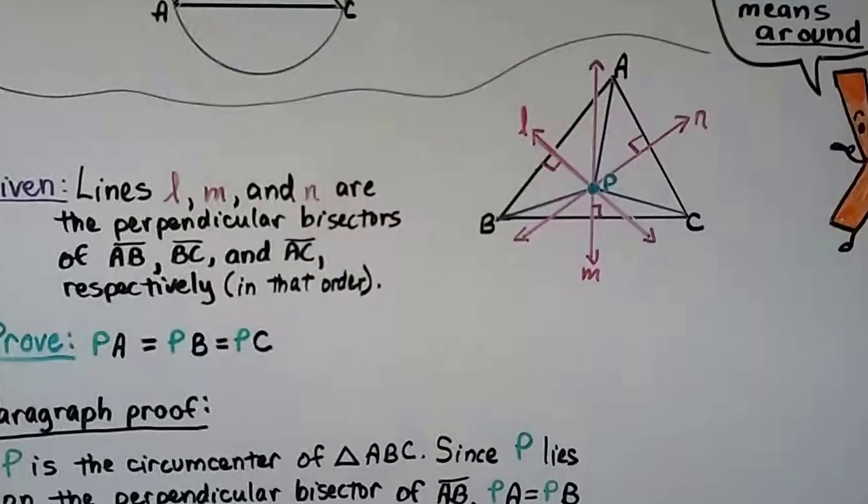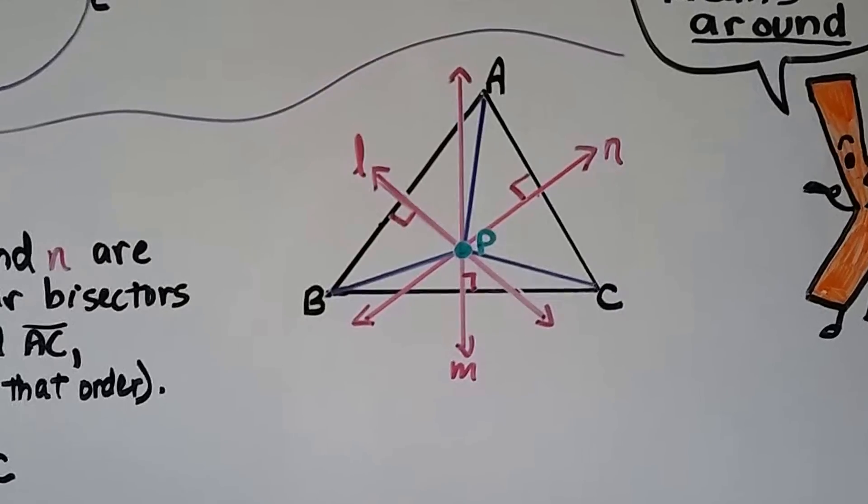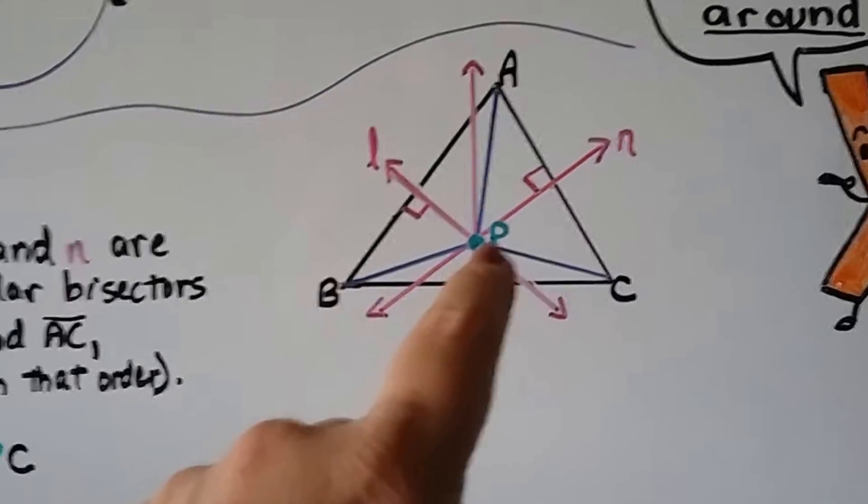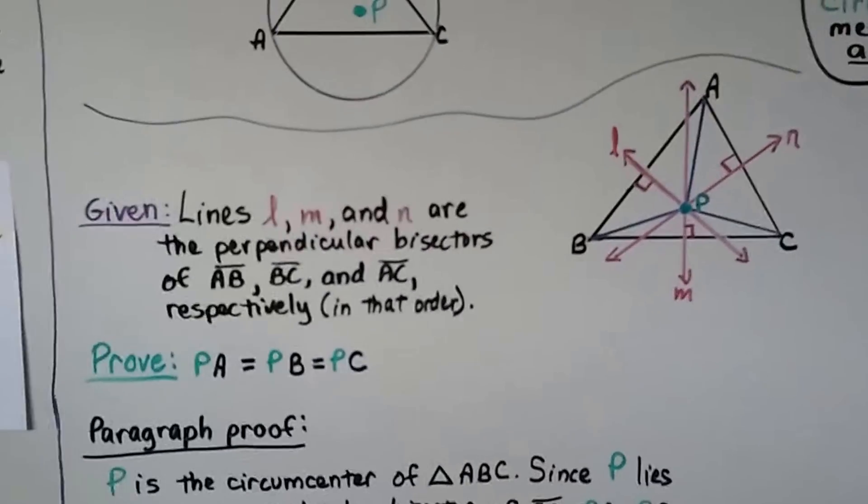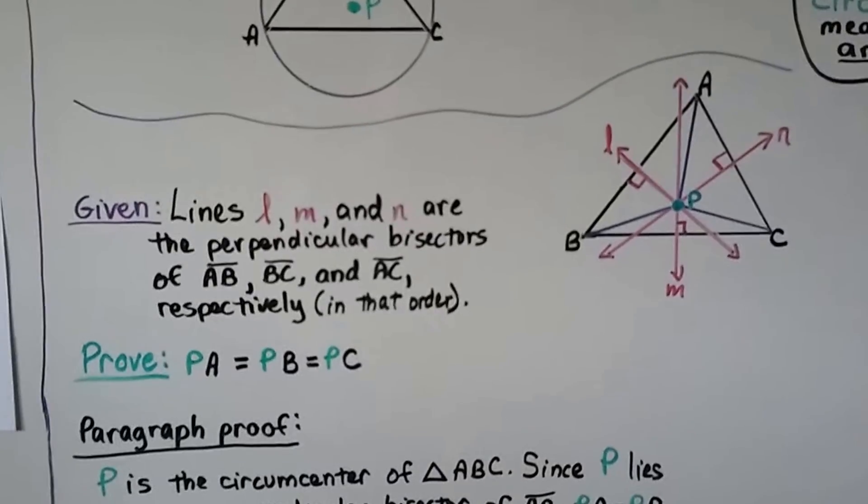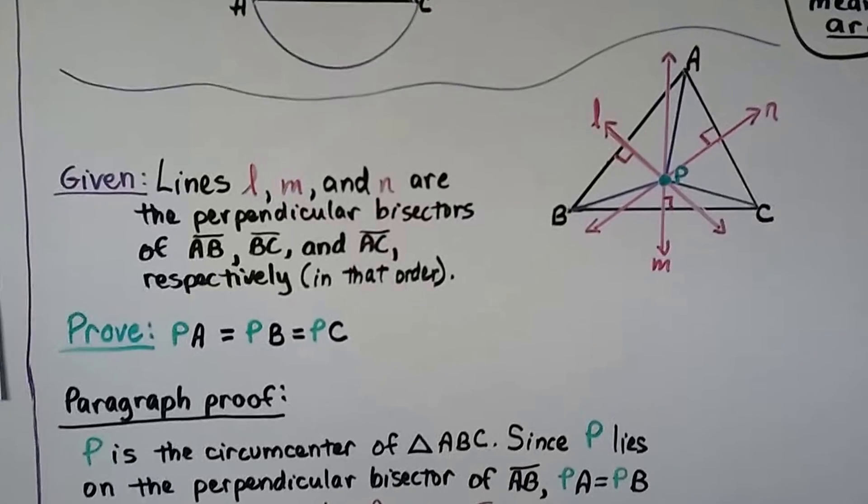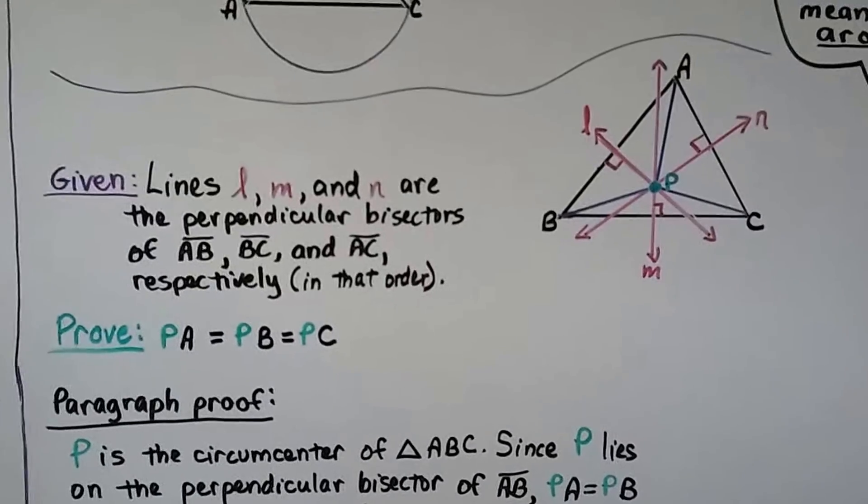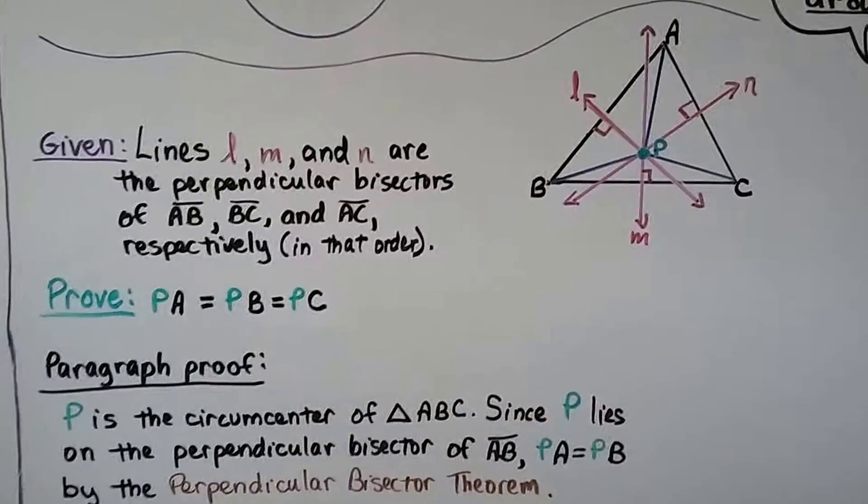Take a look at this drawing. We have all these pink perpendicular bisectors, and we have lines coming from the vertices to P. Our given is lines L, M, and N are the perpendicular bisectors of segment AB, segment BC, and segment AC, respectively, which means in that order. We need to prove that PA is equal to PB is equal to PC.